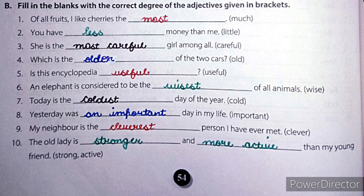Here most is used. Most is the superlative degree of much. Superlative degree is used mostly where the is used. Number 2: you have less money than me. Here less is the comparative degree of little. And mostly in comparative degree, than is used.